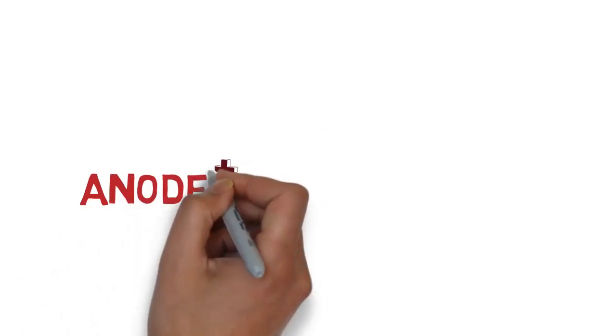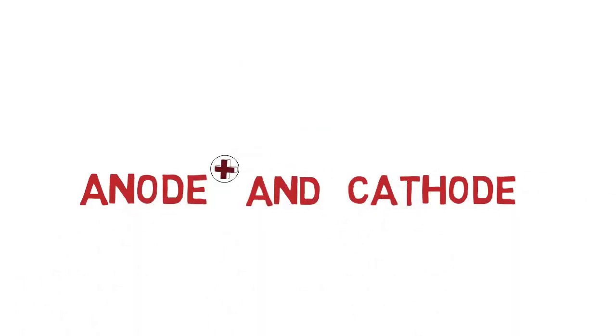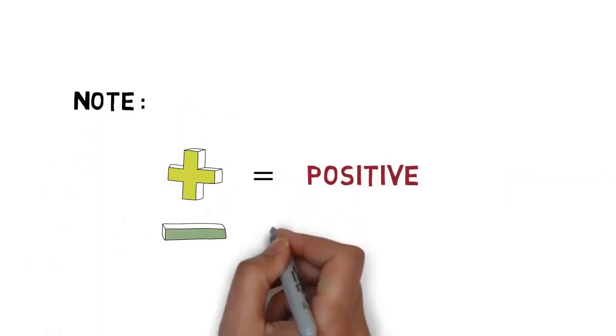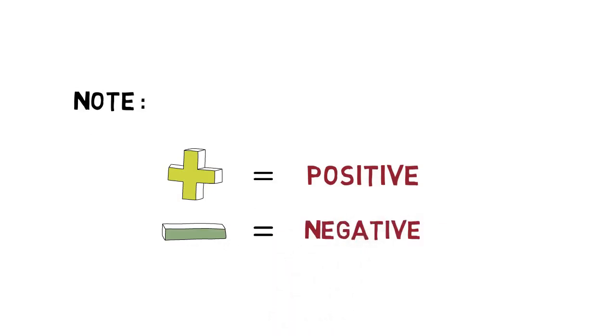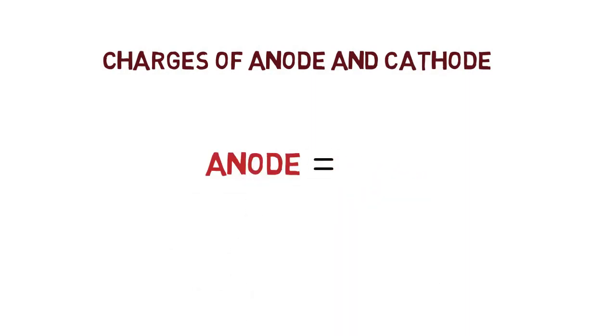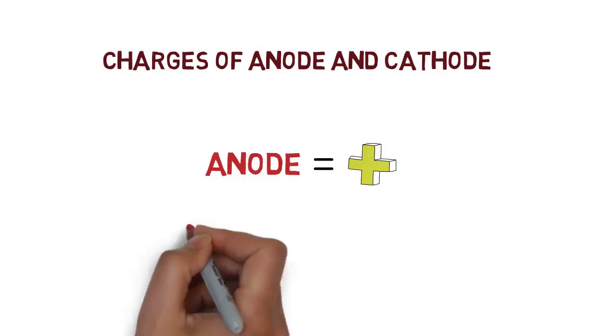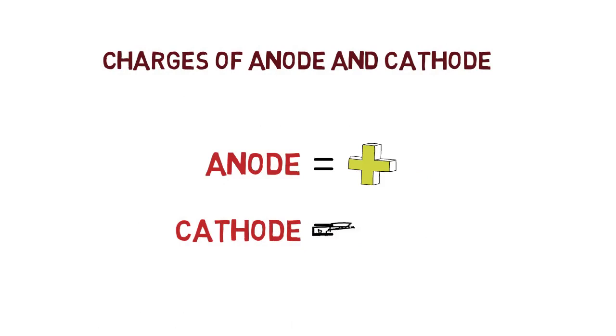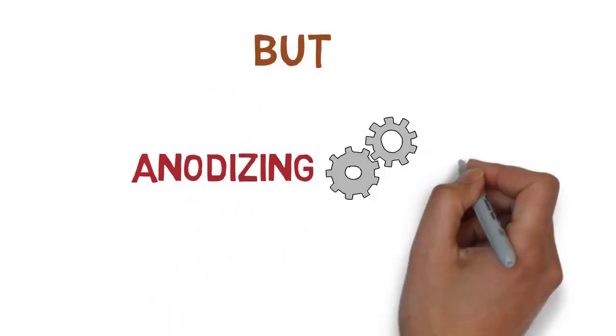Before learning the anodizing process, you should know some basic concepts of anode and cathode. Remember, plus sign shows positivity whereas minus sign shows negativity. Let's use those memorized points in our learning. Anode is positively charged whereas cathode is negatively charged.